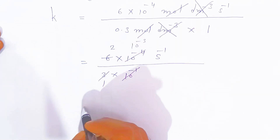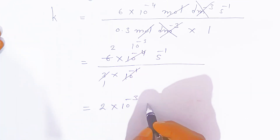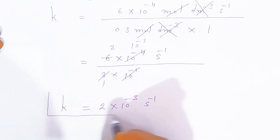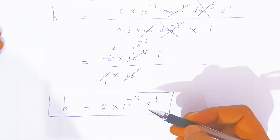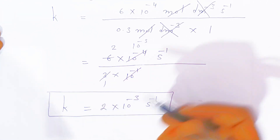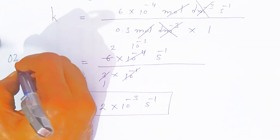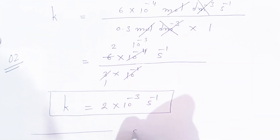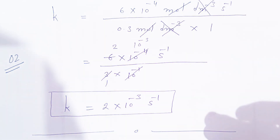So the value of the rate constant is 2×10⁻³ per second. This is the value of the rate constant for this question. This is a very simple approach. For a 2-mark question in board examinations, this is how you have to proceed to find the answer.